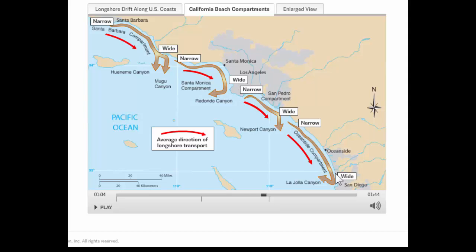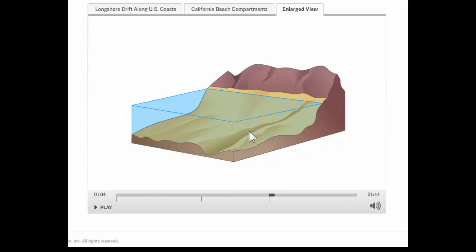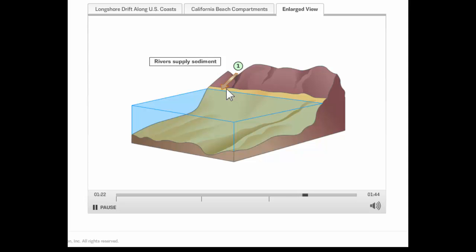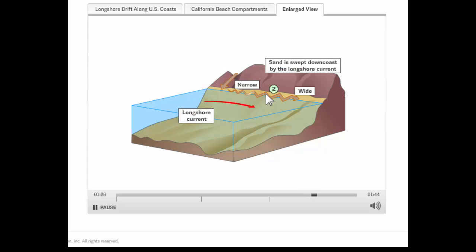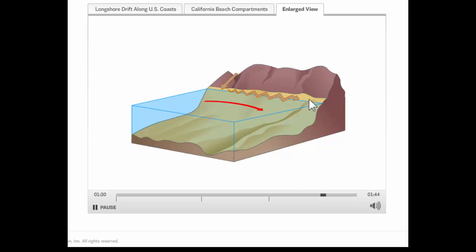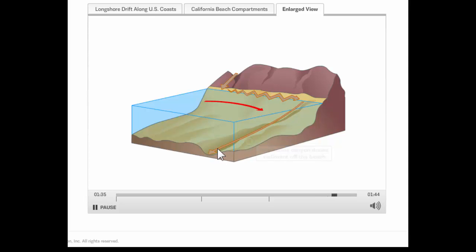We can look more closely at the Oceanside Compartment with a diagram illustrating one of these beach compartments. Sand comes down to the beach from rivers, and also to some degree from bluff erosion, then moves south along the beach because of longshore drift. When the sand reaches the head of one of these submarine canyons, it drains down the canyon out onto the ocean floor. Once it does that, it's pretty much gone — you can't get it back very easily.